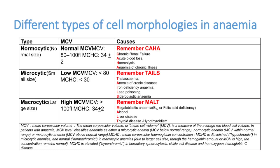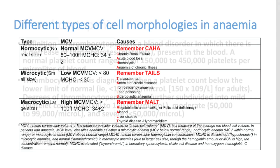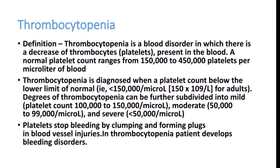Normal platelet count is 150,000 to 450,000 platelets per microliter of blood. When reduced, it is called thrombocytopenia, but clinically important thrombocytopenia is less than 100,000. Mild thrombocytopenia is 100,000–150,000; moderate is 50,000–100,000; and severe is less than 50,000.